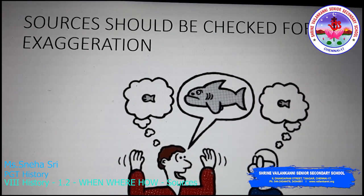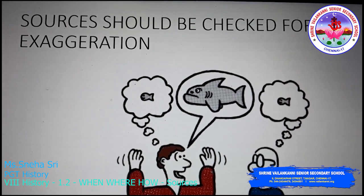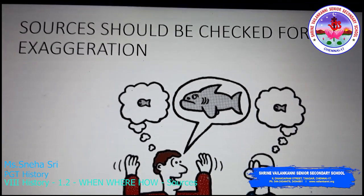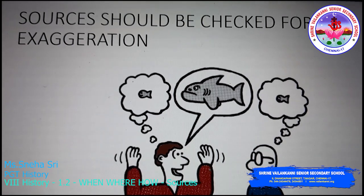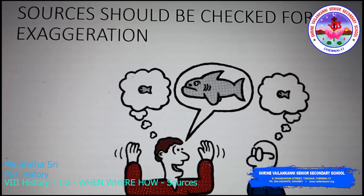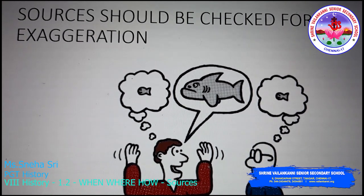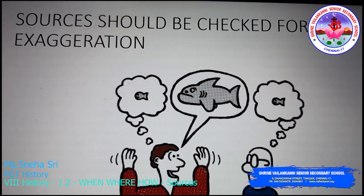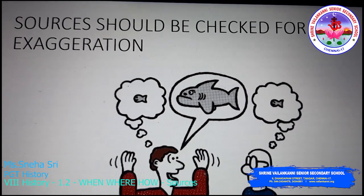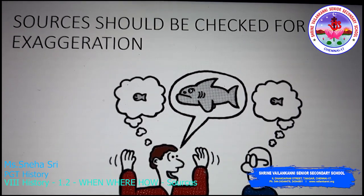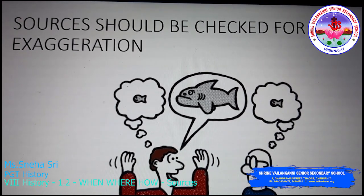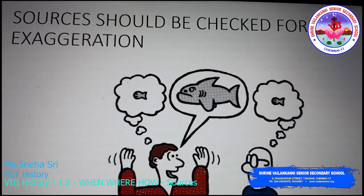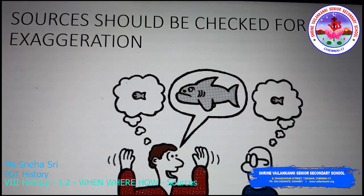Why should sources to study modern history be checked for exaggeration? Here is an example. There was news that the British government had laid railway tracks in India. But how would the British exaggerate while printing it in newspapers? They would say that railway lines have been laid in India for the development of India. So a normal news — the laying of railway tracks — is being exaggerated as being done for the development of India.